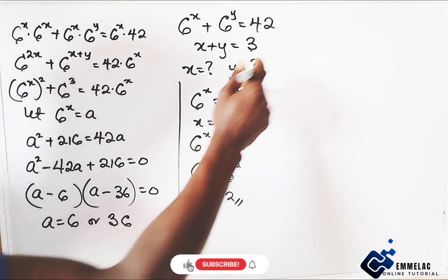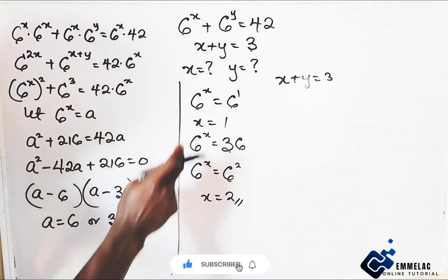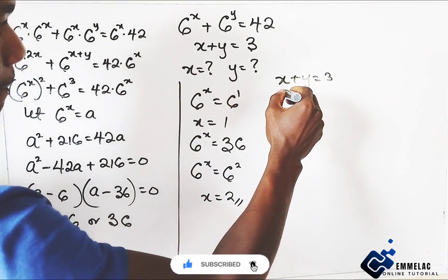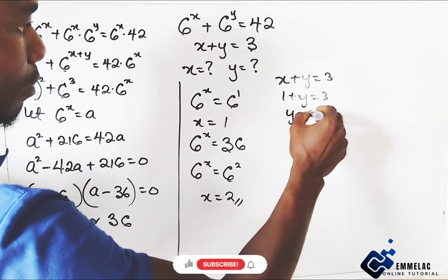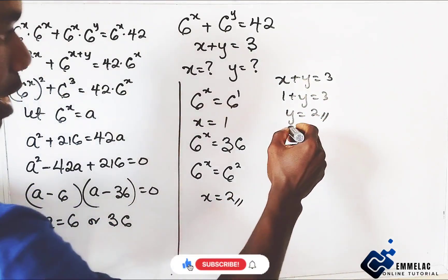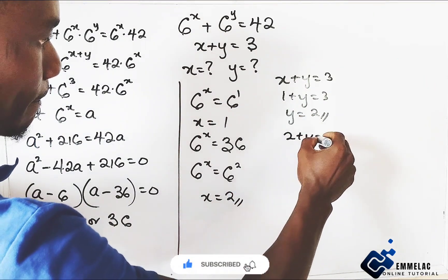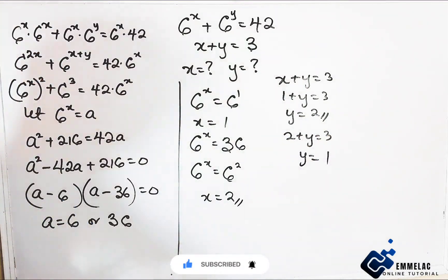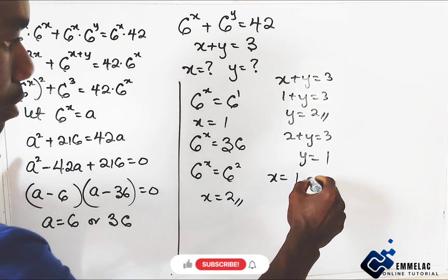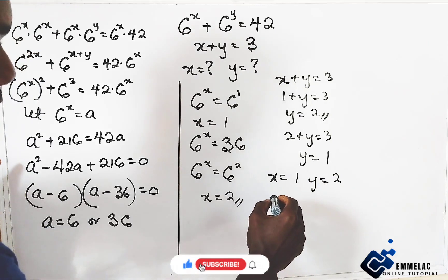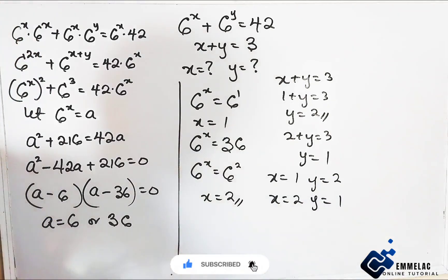Now from here, since x plus y equals 3: when x equals 1, then y equals 2. And when x equals 2, then y equals 1. So our solutions are: x equals 1 and y equals 2, or x equals 2 and y equals 1.